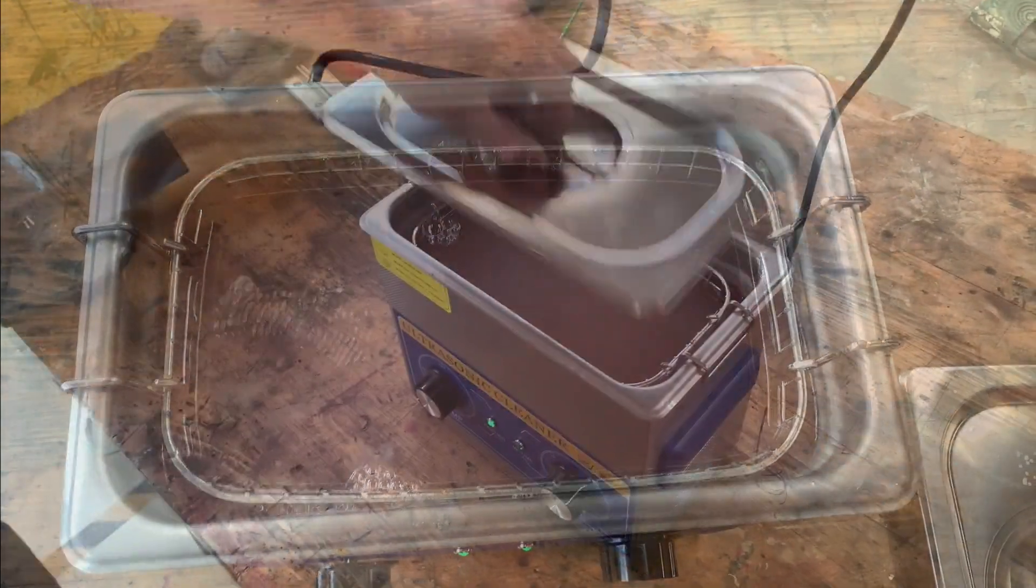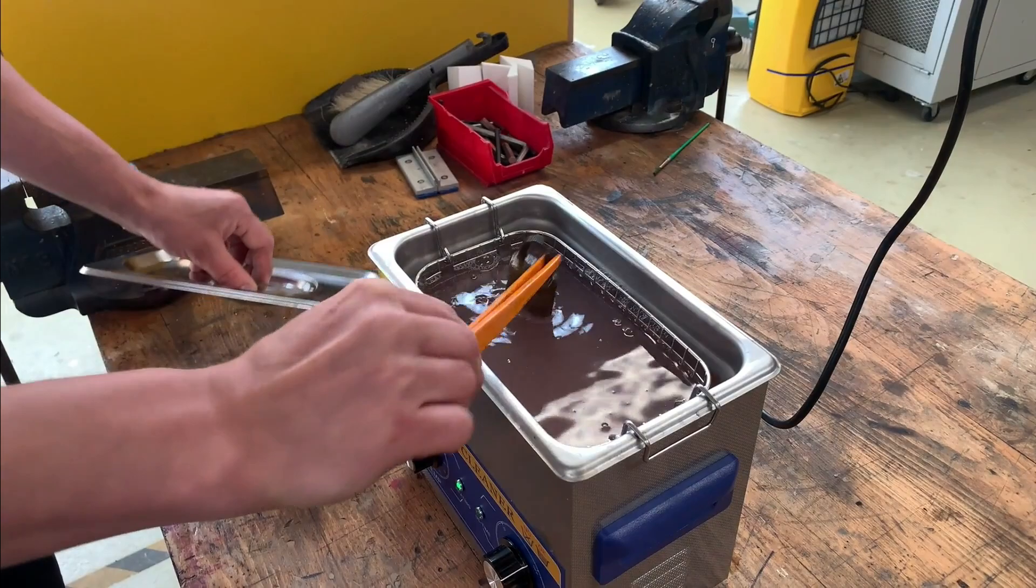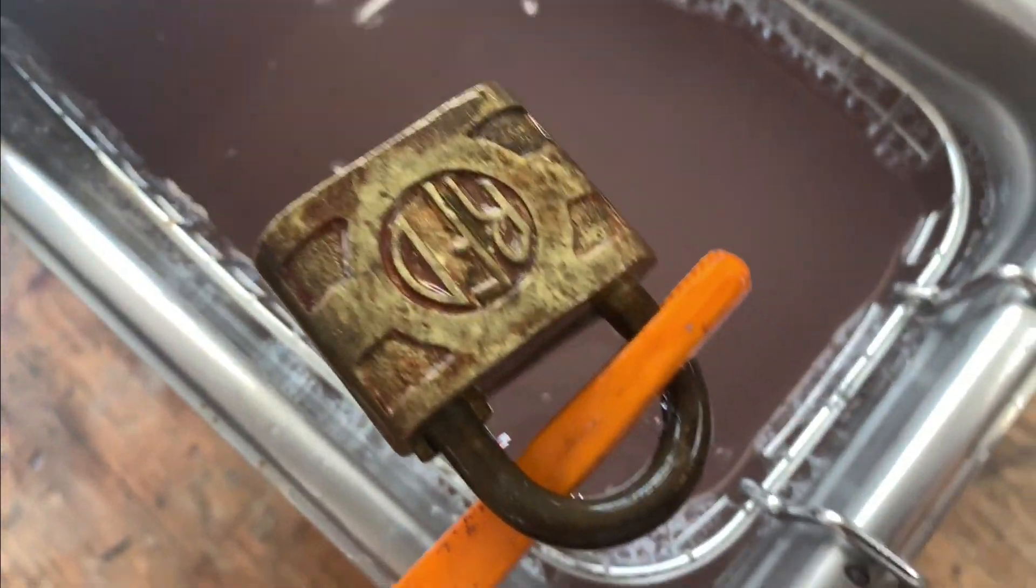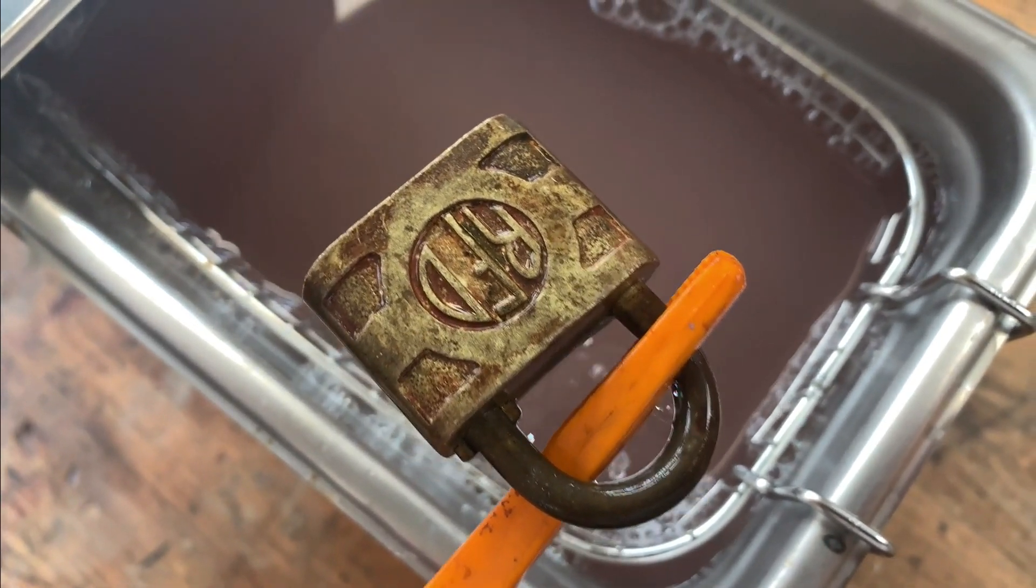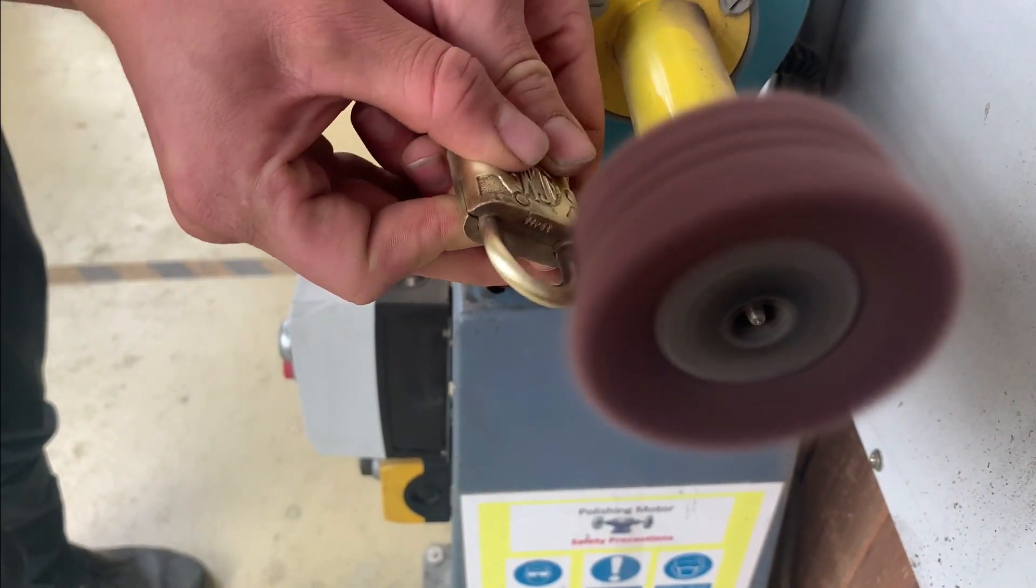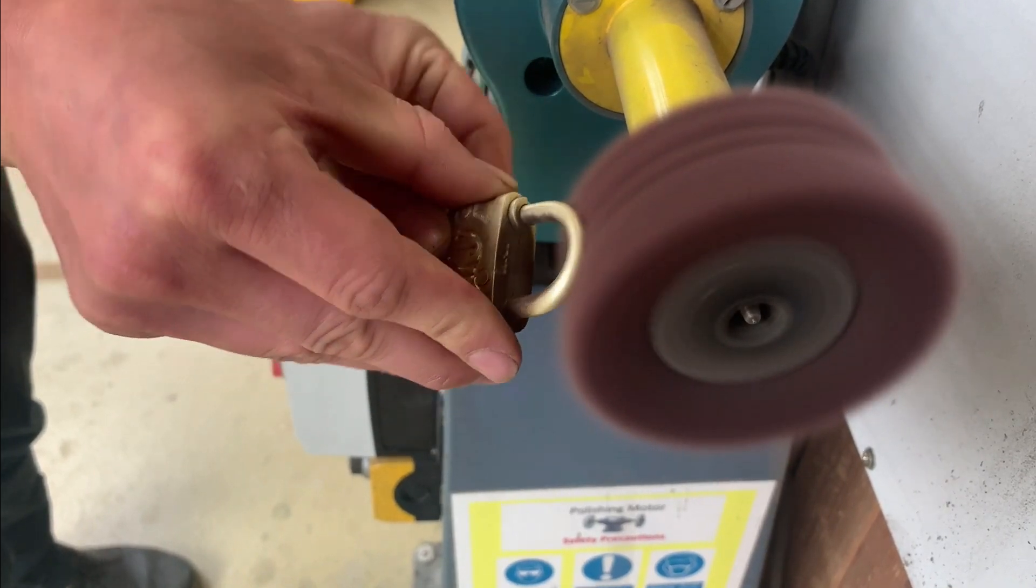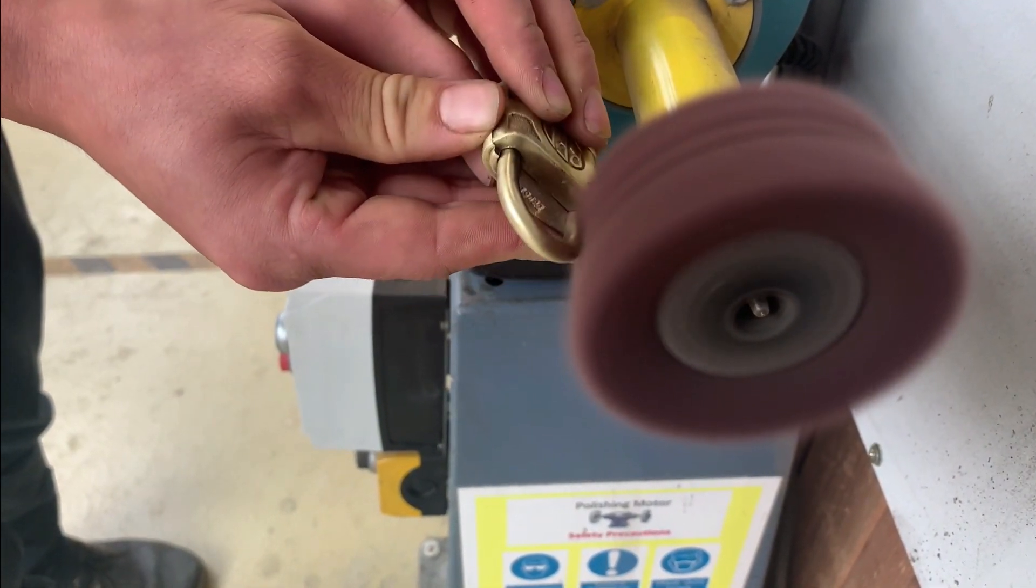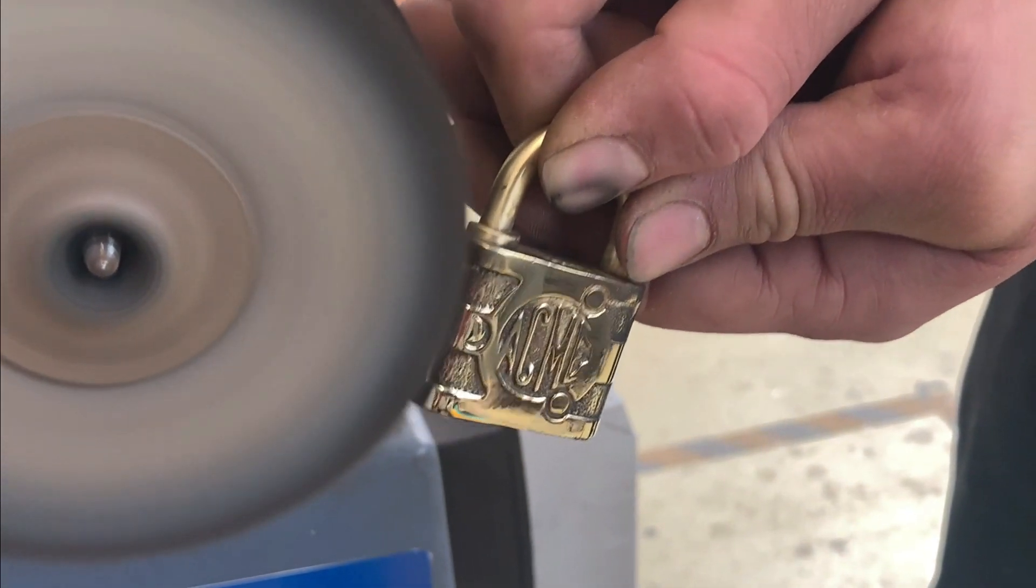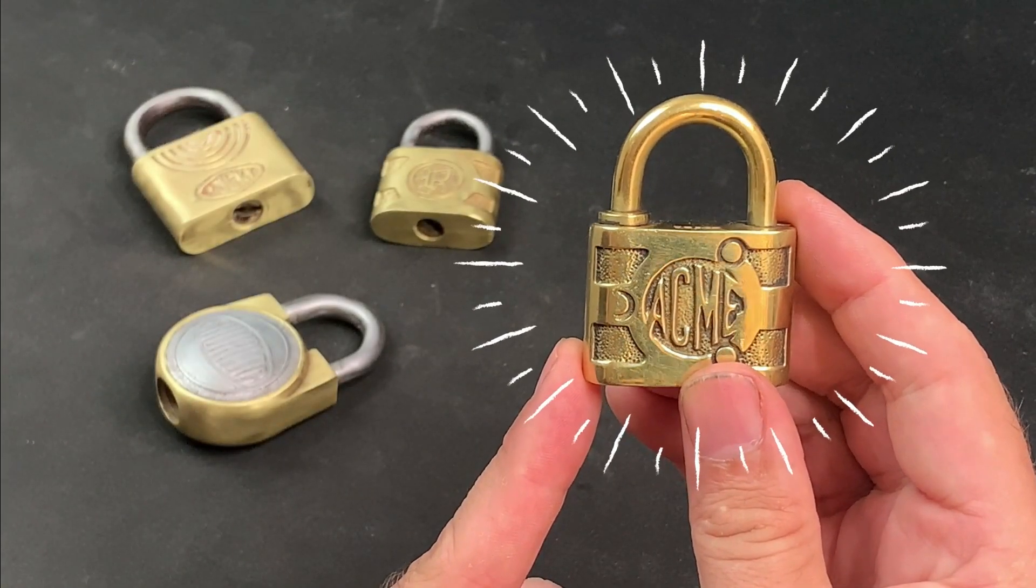The high frequency pressure or sound waves agitate the solution producing forces which can penetrate even the smallest cracks and recesses in the locks and then once the process has run its course Ed used a couple of different polishing wheels to clean any residue off and work away any stubborn sections that the ultrasonic bath hadn't completely cleared away in the time that it had been given and the results were really impressive. While some of you might feel that bringing a lock to a high polish like this isn't quite in keeping with the spirit of restoration I completely understand but look how shiny and pretty this lock turned out.